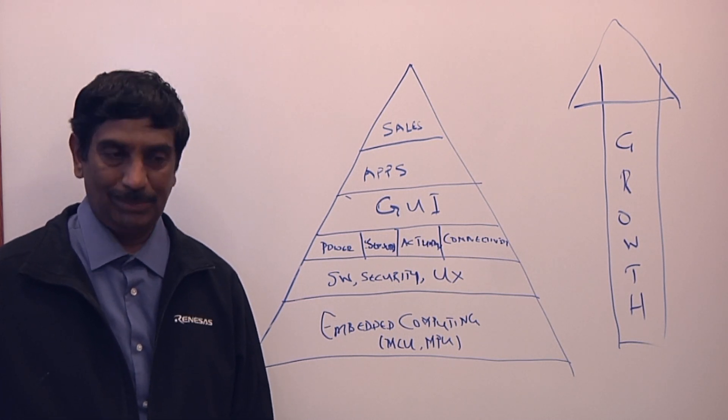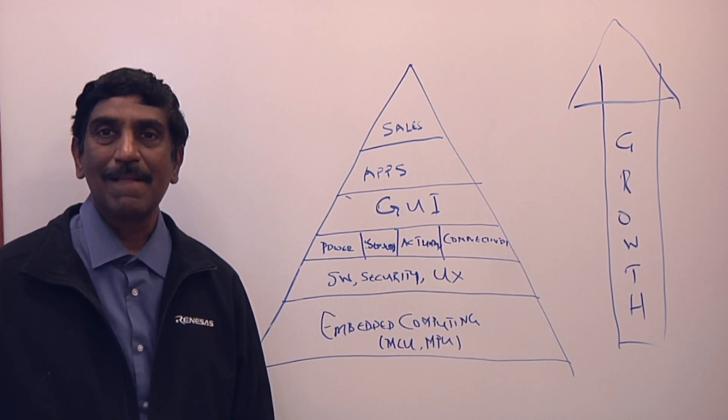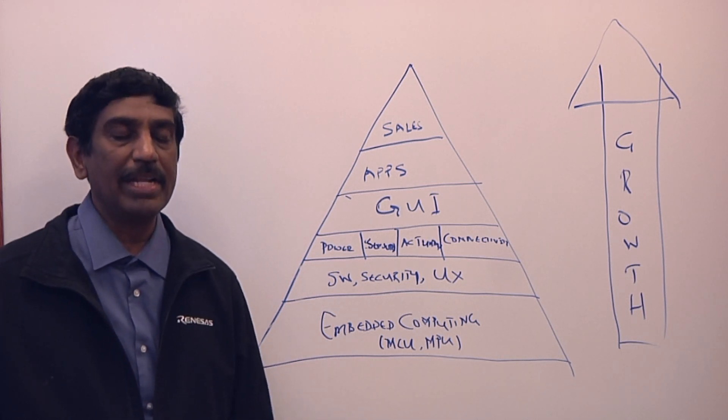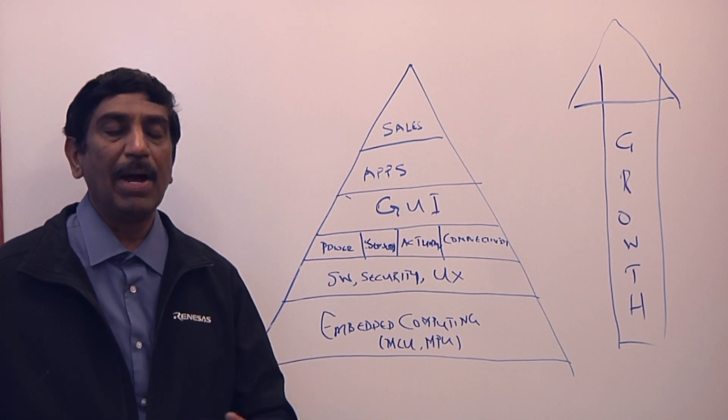There's this vague area in between which is now we call it the edge, but really it stretches from the endpoint all the way up to the cloud. What is that starting to look like? Are you getting any form out of this, or is it still this murky area? Increasingly, the cloud is being defined by large workloads.